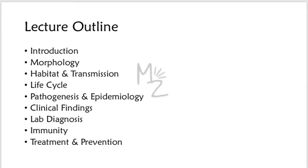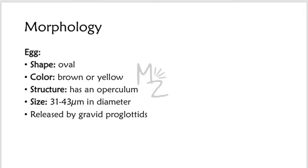Morphology — it has three forms: egg, larvae, and adult. Eggs are oval shaped, brown or yellow in color because they are bile stained. They have an operculum at one end, especially at the bottom of their shell, and are about 31 to 43 micrometers in diameter, so they must be visualized under the microscope — not visible with the naked eye. They are released by the gravid proglottids in the feces.